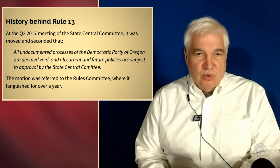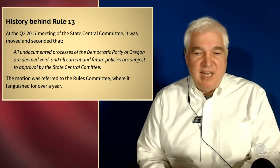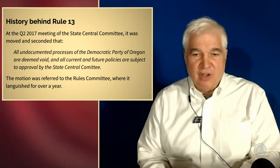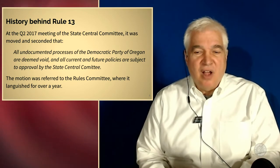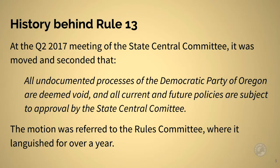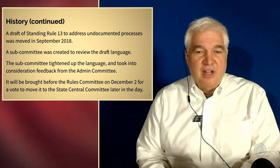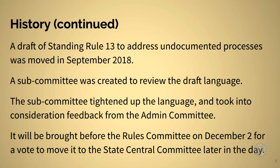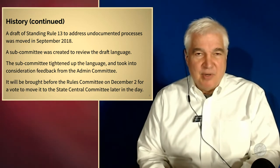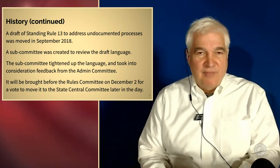The history behind this rule began at the Q2 2017 meeting of the State Central Committee, now a year and a half ago. It was moved and seconded that all undocumented processes of the Democratic Party of Oregon are deemed void, and all current and future policies are subject to approval by the State Central Committee. The motion was referred to the Rules Committee, where it sat for over a year. A draft solution was written and proposed in September of this year, and a subcommittee was created to review the draft language. That subcommittee has finished their work, and we will be passing it back to the Rules Committee on December 2nd to be brought before the State Central Committee for final passage.